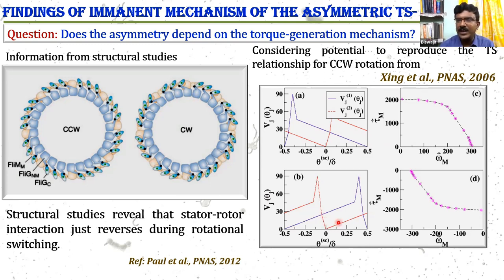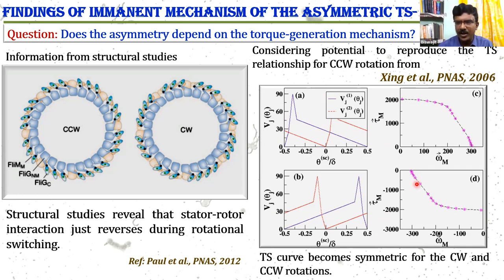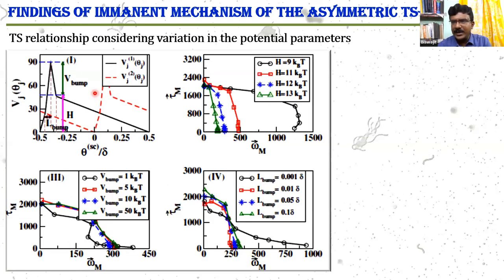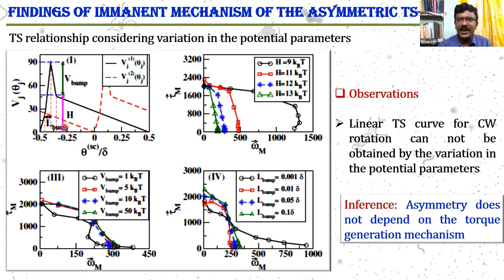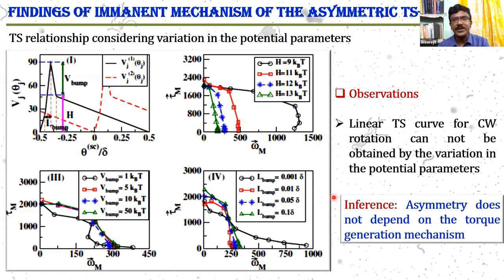If we consider the stator-rotor interaction potential — specifically an asymmetric sawtooth potential — following the work of Xing et al. from the HPNS paper, we can reproduce the torque-speed relationship for CCW rotational mode. According to structural studies, we can establish the torque-speed relation for CW mode using the mirror image potential. But in this case, we observe it gives a symmetric torque-speed relationship. We also varied the parameters of the potential — the height and length of the bump region — and no linear torque-speed relation was ever obtained. So we infer that the asymmetric torque-speed relation does not depend solely on the torque generation mechanism.